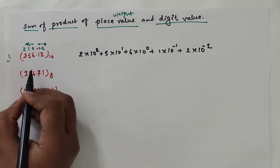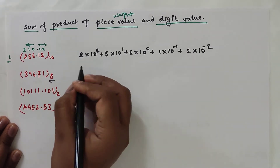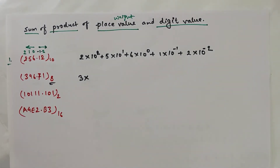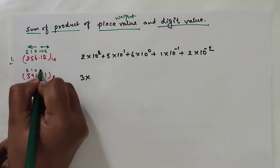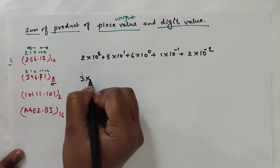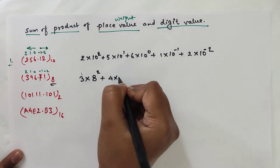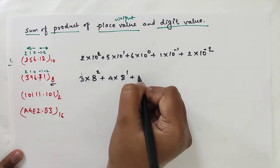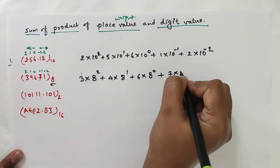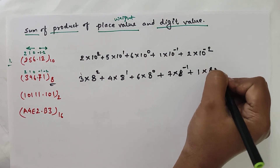In the same way, if we have a number given in the octal number system, the base will be 8. We can write the expanded form using powers of 8: for example, 2 × 8² + 4 × 8¹ + 6 × 8⁰ + 7 × 8⁻¹ + 1 × 8⁻².